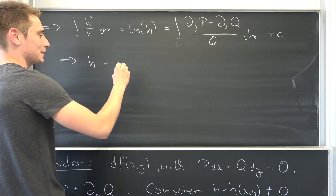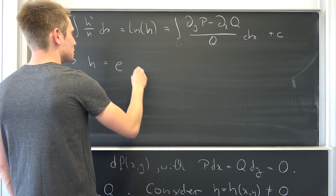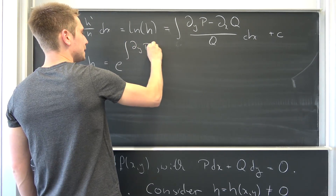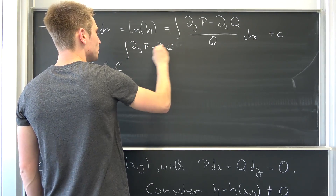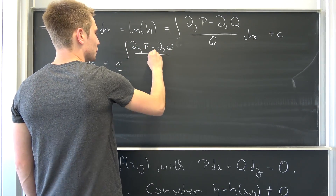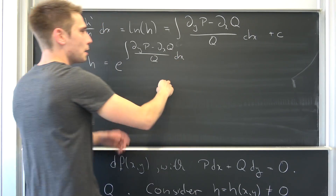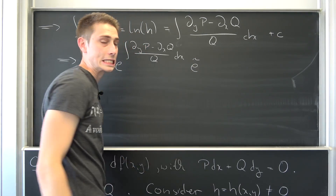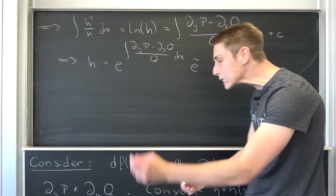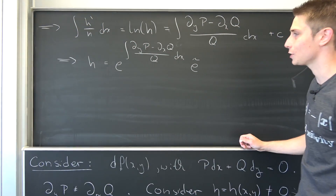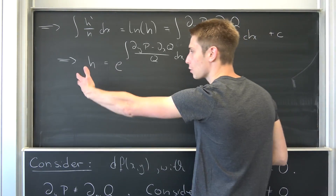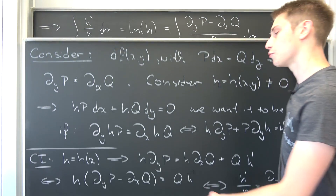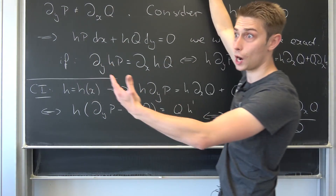H is nothing but e to the integral of (del_y P minus del_x Q) over Q dx, plus C. We can use the exponential property to turn this into e^C — which is just some constant — times the exponential of the integral. And this right here is the general formula for our H.